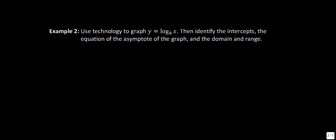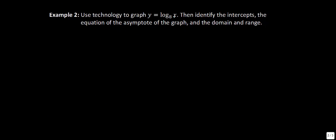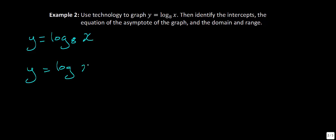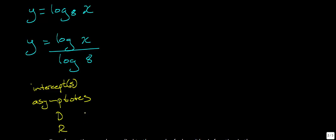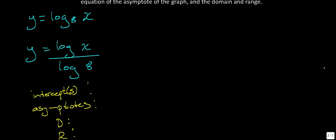Example two says: use technology to graph y = log base 8 of x, then identify the intercepts, the equation of the asymptotes, and the domain and range. To use technology, we rewrite y = log_8(x) as y = log(x) / log(8), then enter this into Desmos at desmos.com.